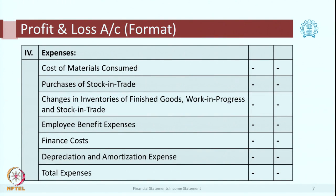The next item is employee benefit expenses. In simple terms you can say it is salary expense, but it may also include other employee benefits like overtime, bonuses, perquisites, the cost of facilities given to employees, and the cost of recruitment. All those items would be clubbed together under the heading employee benefit expense.